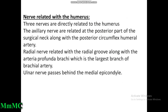Three nerves are directly related to the humerus. The axillary nerve is related at the posterior part of the surgical neck, along with the posterior circumflex humeral artery. The radial nerve is related to the radial groove, along with the arteria profunda brachii, which is the largest branch of the brachial artery. The ulnar nerve passes behind the medial epicondyle.